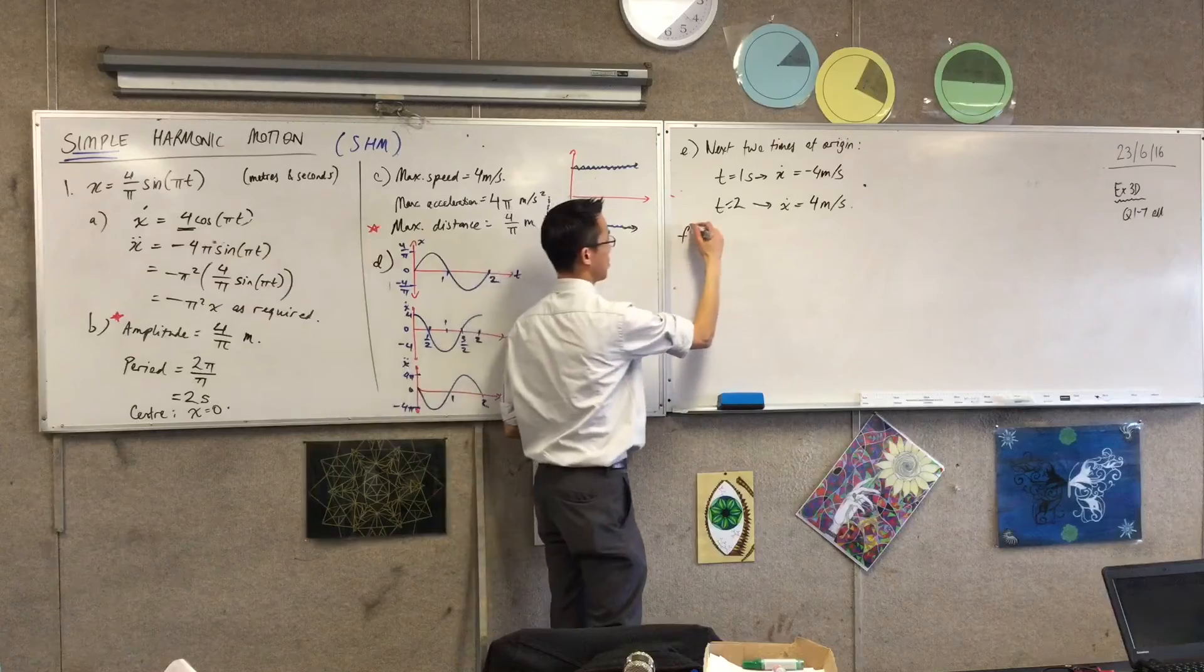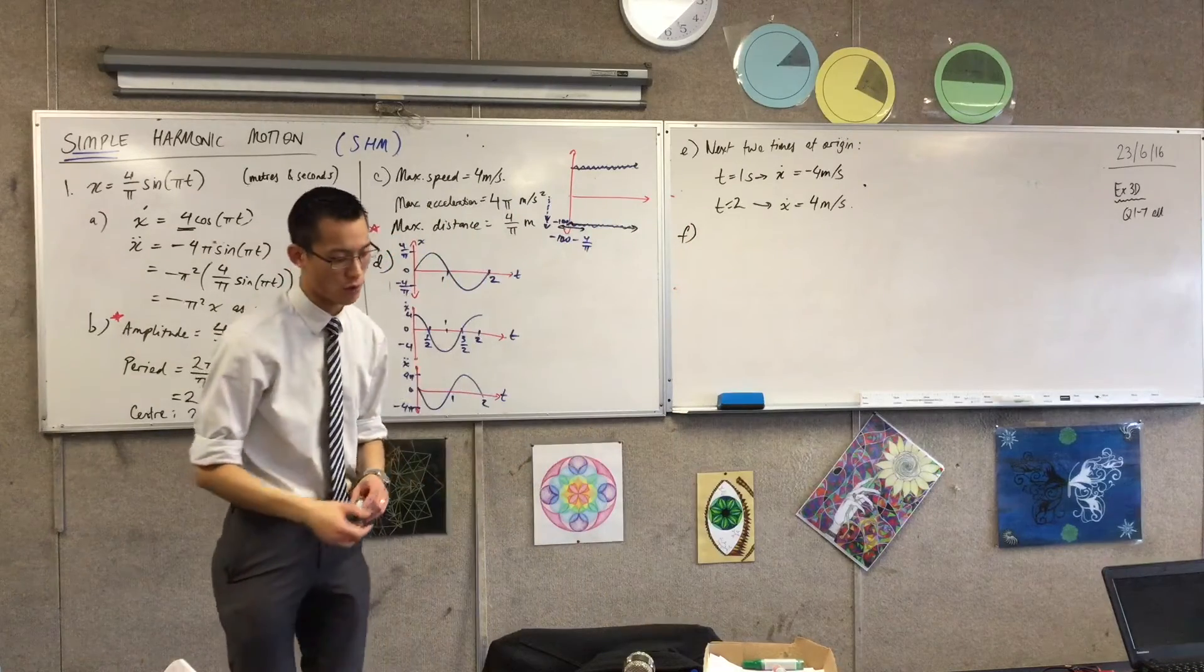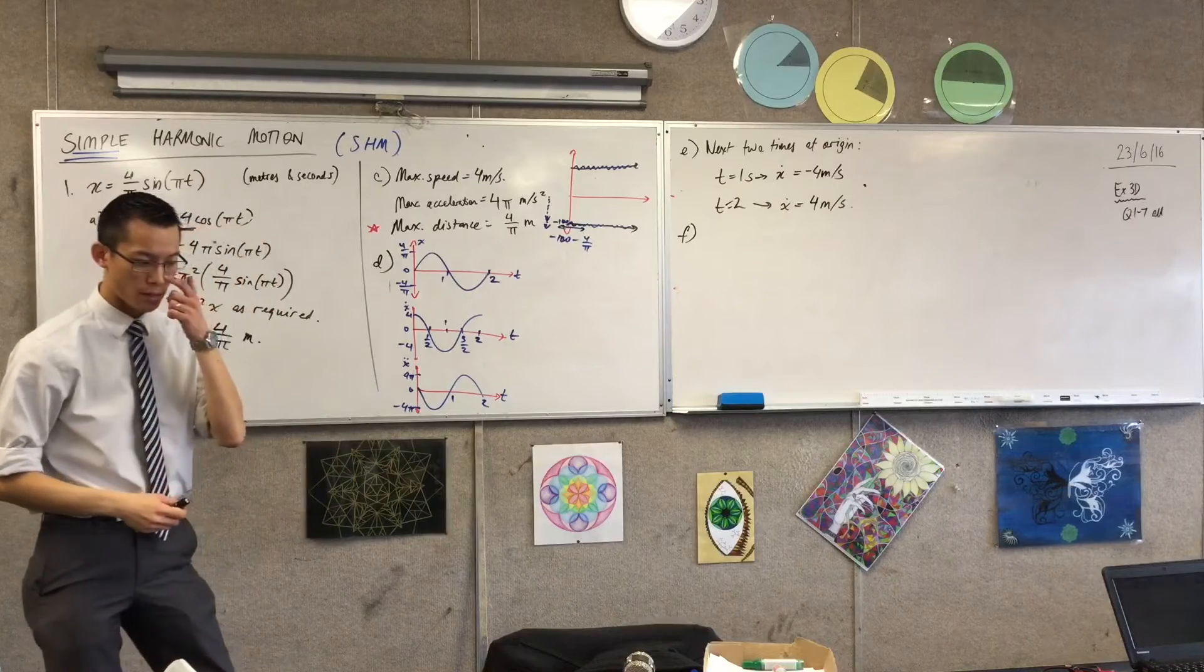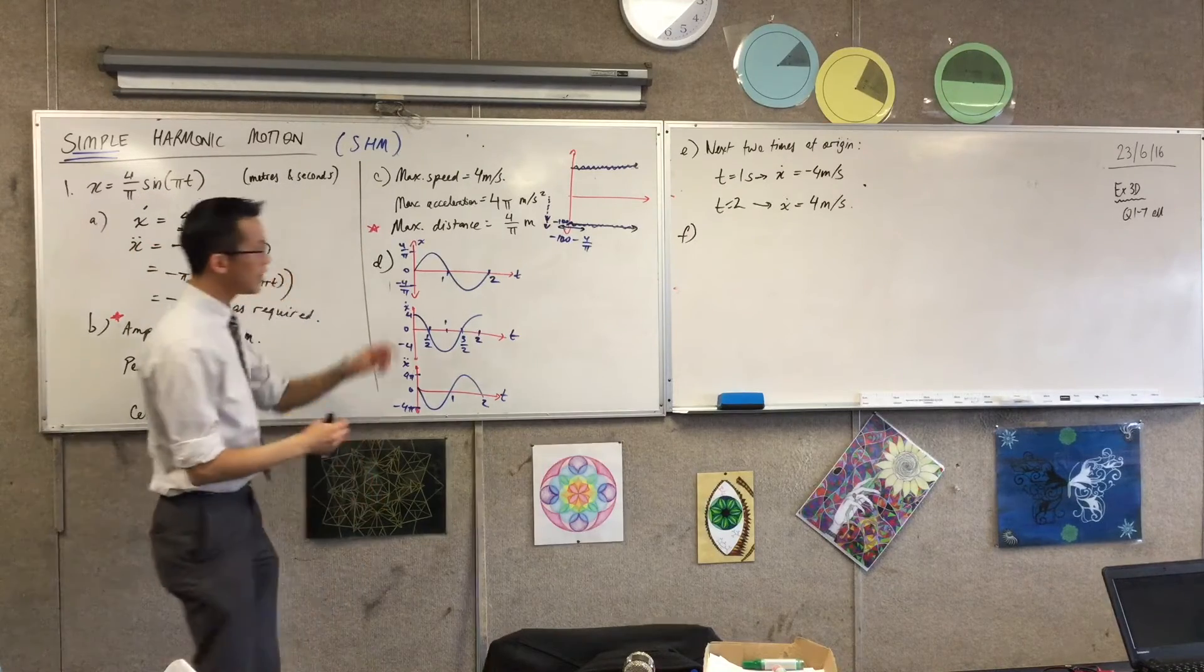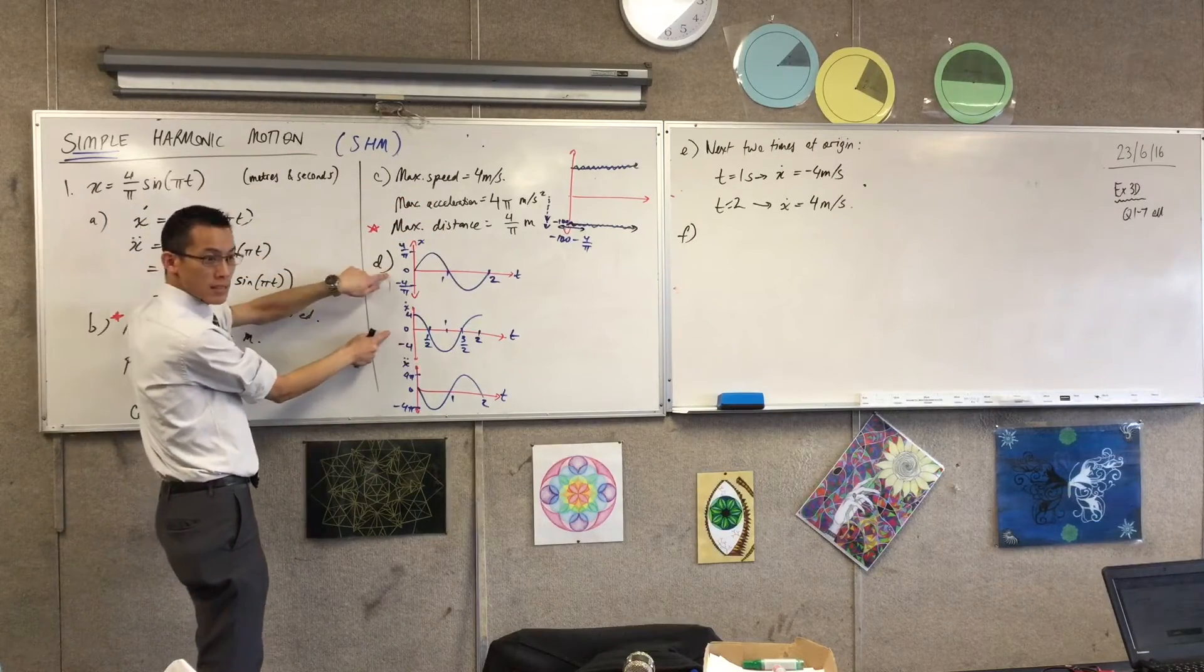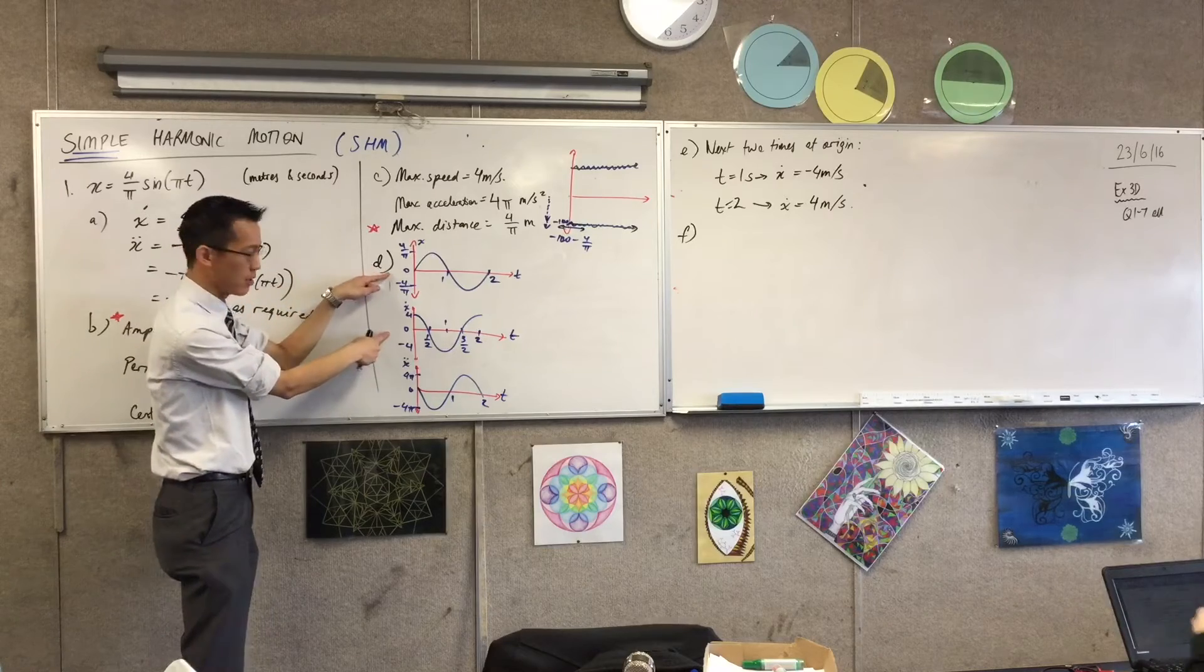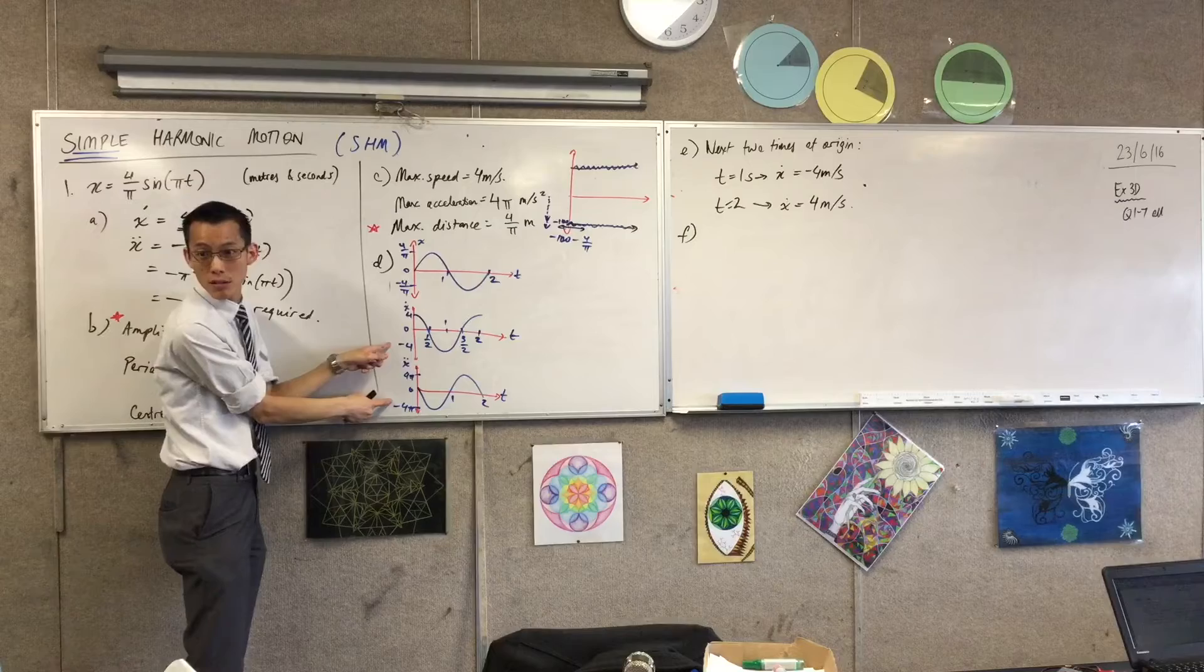Last ones. Read it, and you can see what you need to interpret and which graph you need to go for. Right? Find the first two times the particle is stationary and the acceleration there. So, to answer part E, right, we focused on displacement and the velocity graph. Right? These two. To answer this next question, we're still going to look at two graphs. We're going to look at these two. Right?